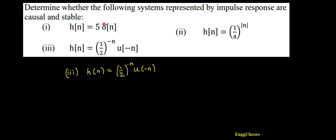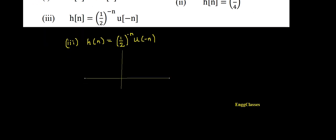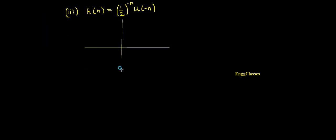Before I proceed testing for causality and stability, the very important thing is to first sketch this signal. It is the multiplication of two signals — one is (1/2)^(-n) and another signal is U of minus n. So let me consider two signals and draw x-axis and y-axis. This is the first signal that gets multiplied with the second signal, and I am going to get the answer in the third signal, which is the impulse response H of n.